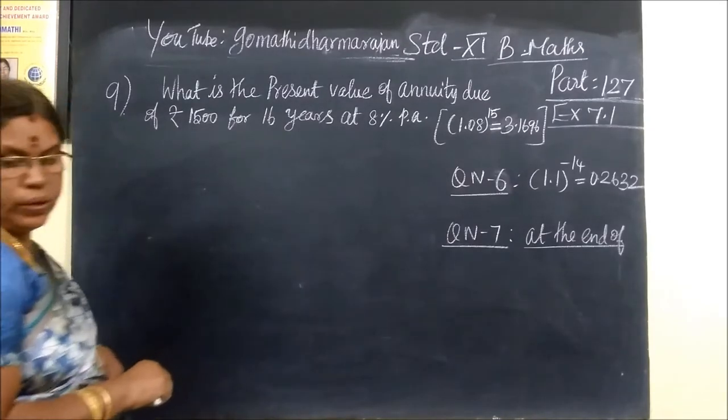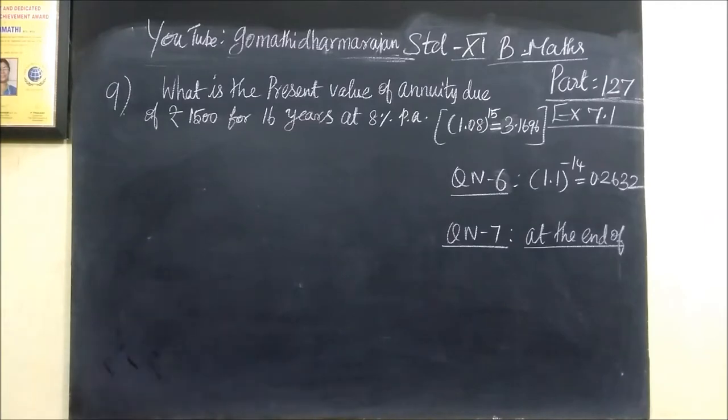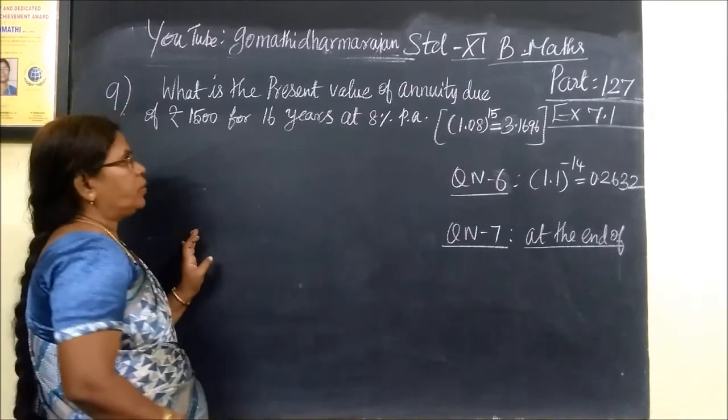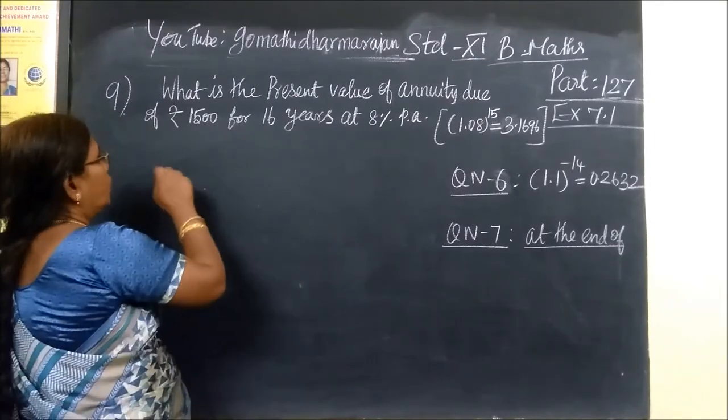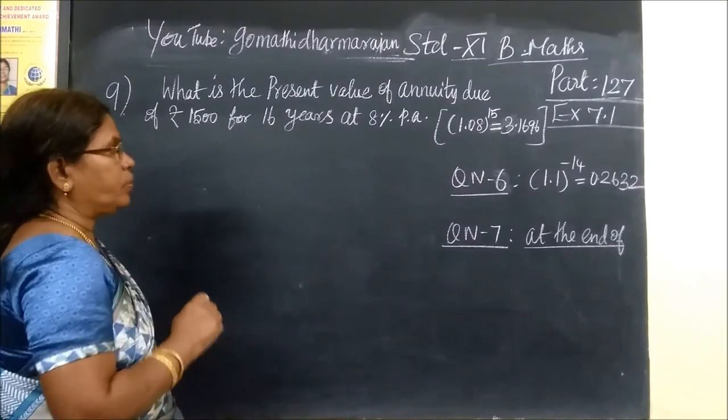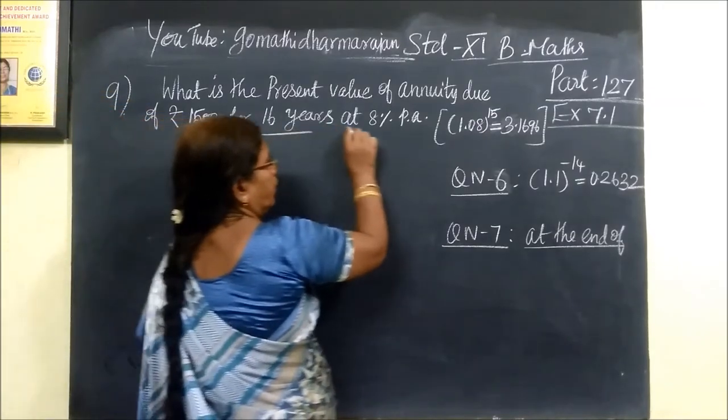The second question is part 127. What is the present value of annuity of Rs.1500 for 16 years? That is 8%.